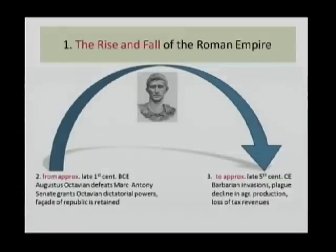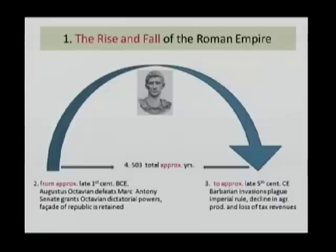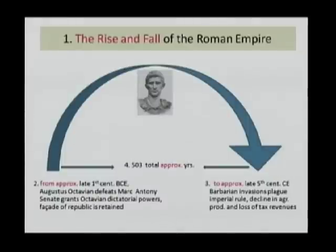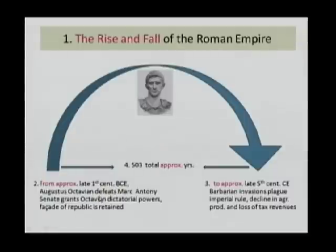Now, the fourth part is a simple subtraction of points two and three. You might ask, how do you subtract such fuzzy approximate date ranges as these? Well, here you do have to think of two fixed years. In my example, I've chosen to add 27 BCE — the date of Octavian's rise to power — to 476, the traditional ending date of the empire, and you get approximately 503 total years.